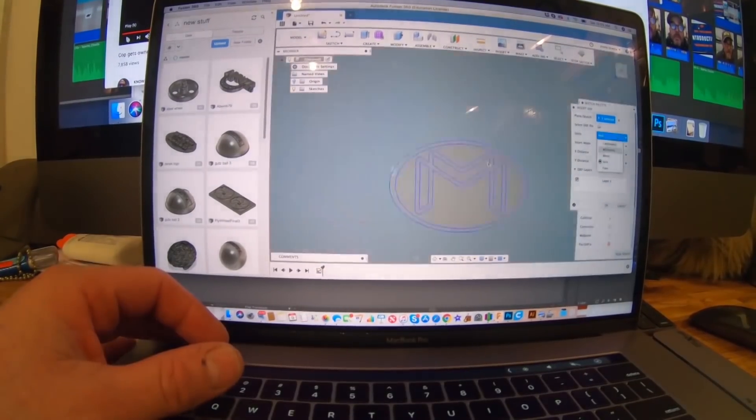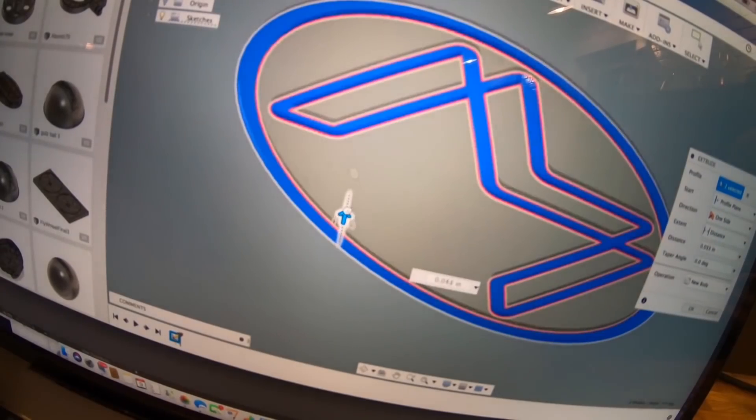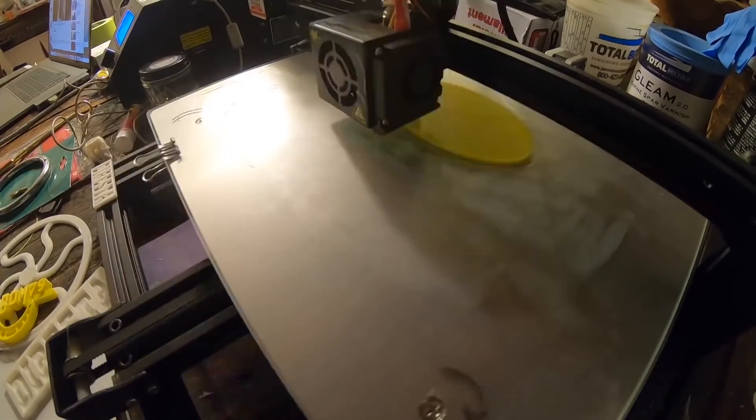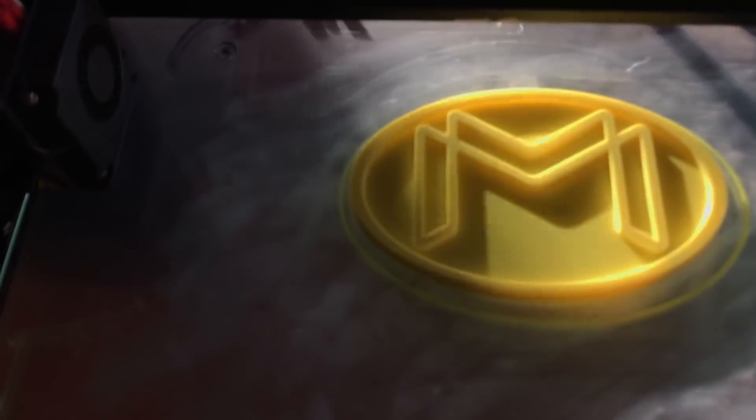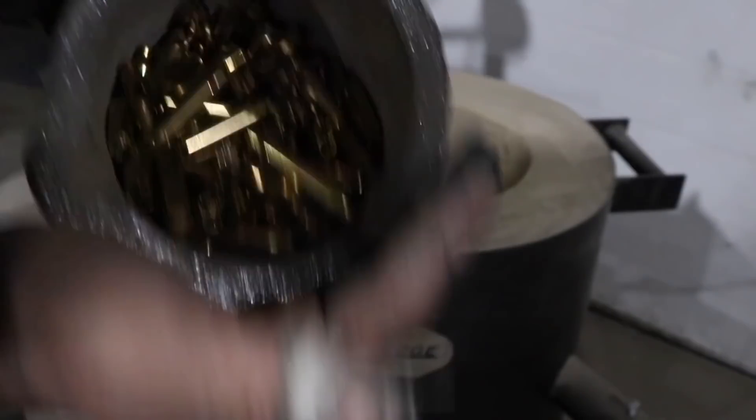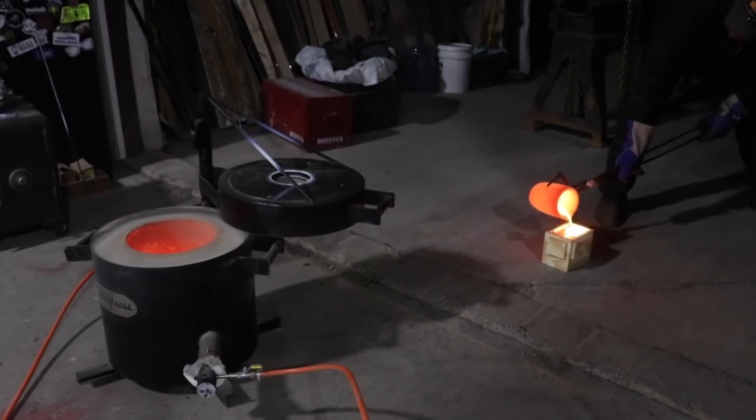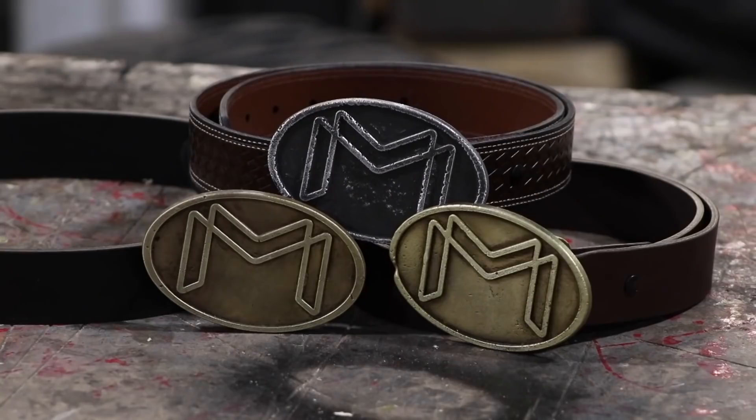Bob's friend Jimmy DiResta has a surprising project up on his YouTube channel. Using a 3D printed model, he shows how to cast a metal belt buckle. He makes one out of melted brass bullet casings, empty ones, and another from melted aluminum computer parts.